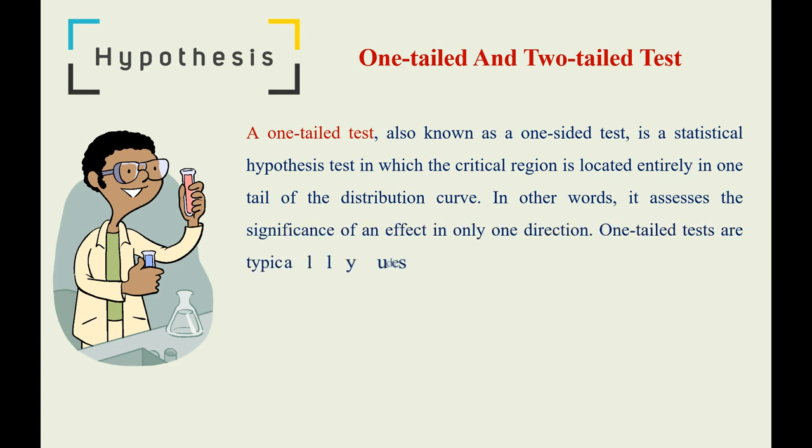In other words, it assesses the significance of an effect in only one direction. One-tailed tests are typically used when there is a specific expectation or interest in detecting an effect in a particular direction.